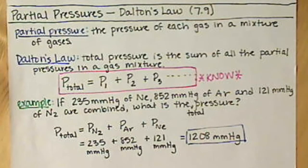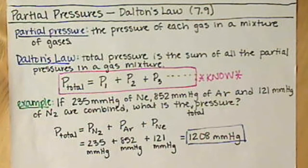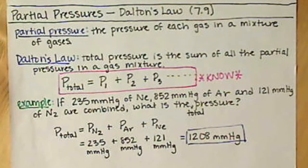In the next example, I'll kind of show all of Chapter 7 together, show the mole road, and give a big example.